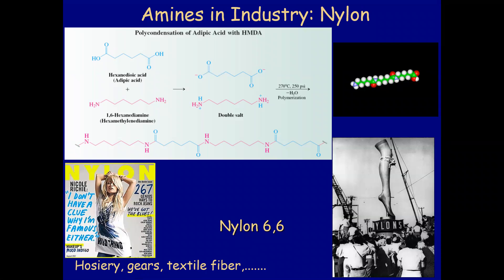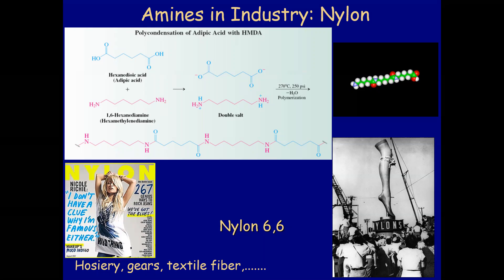In industry we can use amines to make nylon. Nylon is an amide bond — a reaction between an amine and a hydroxy acid. What is used is 1,6-hexanediamine and hexanedioic acid. This is better than using 6-aminohexanedioic acid because that will polymerize on its own. You need to mix the two components together first, and this product is nylon-6,6.